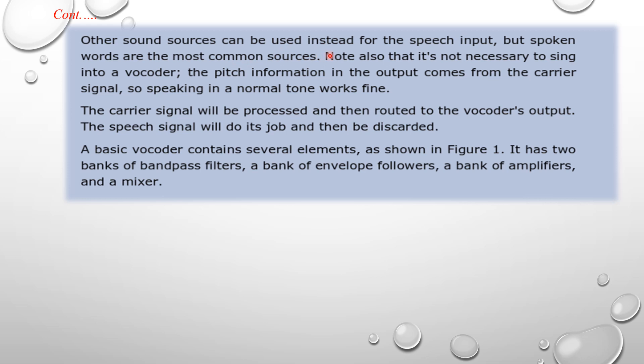Other sound sources can be used instead of speech input, but spoken words are the most common sources. Note also that it's not necessary to sing into a Vocoder. The pitch information in the output comes from the carrier signal, so speaking in a normal tone works fine. The carrier signal will be processed and then routed to the Vocoder output. The speech signal will do its job and then be discarded. The basic Vocoder contains several elements as shown in the figure: two banks of bandpass filters, a bank of envelope followers, and a bank of amplifiers and mixers.